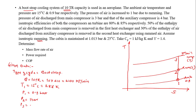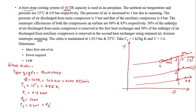Since the compressor efficiency is given, I need to show the actual point 3-dash as well, where P3 equals P3-dash. After the first compressor there is heat exchange in the first heat exchanger, and because of heat exchange the temperature will drop. Point 4 is the heat exchanger exit point, and the heat exchange process occurs at constant pressure, so P3 equals P4.